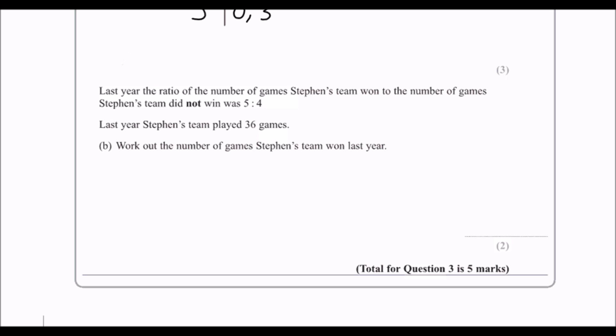Okay. Last year, the ratio of number of games they've won to they lost, or did not win, is five to four. They played thirty-six. So how many did they win last year? So there are nine parts for the ratio.